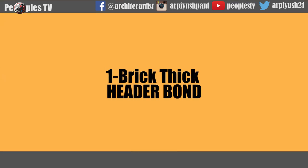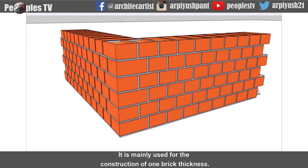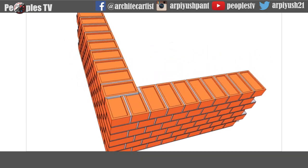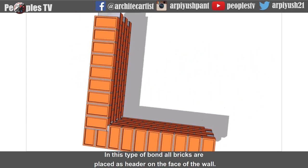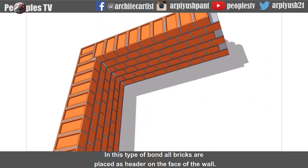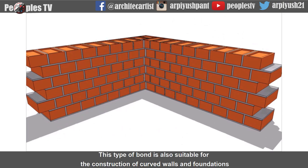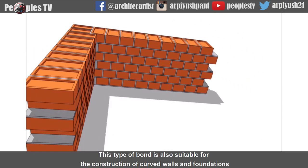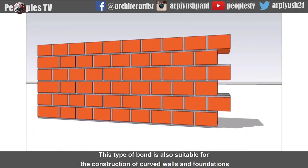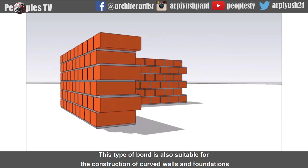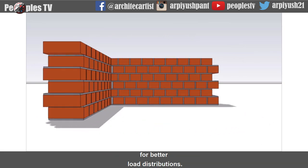Let's start with the header bond. It is mainly used for the construction of one brick thickness walls. In this type of bond, all bricks are placed as headers on the face of the wall. This bond is also suitable for the construction of curved walls and foundations for better load distribution.